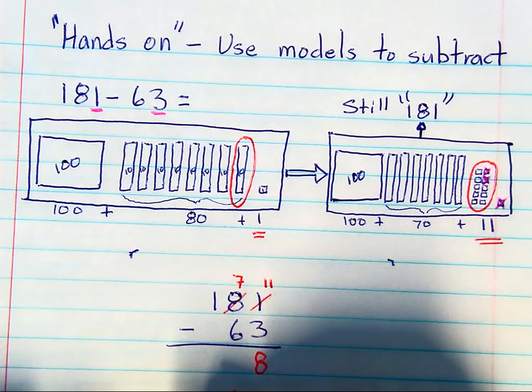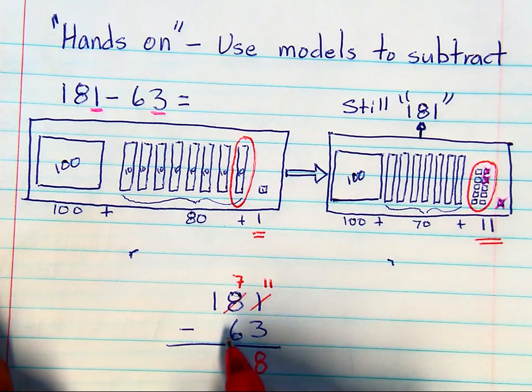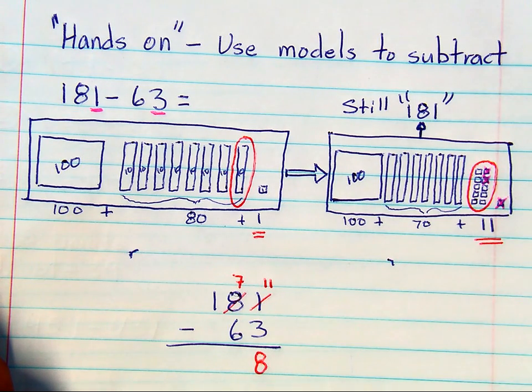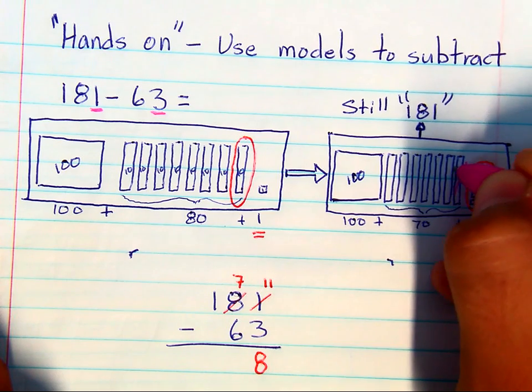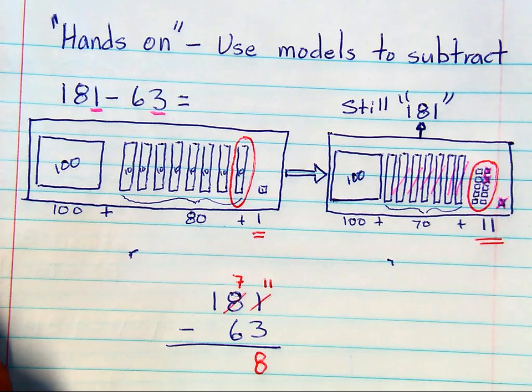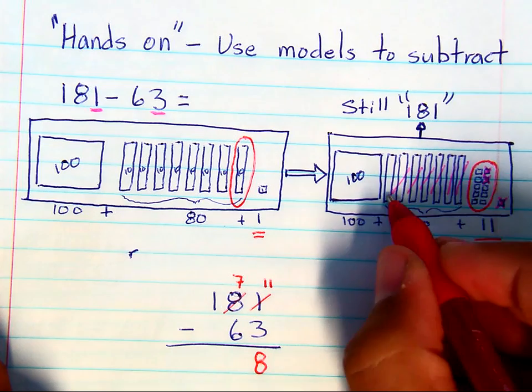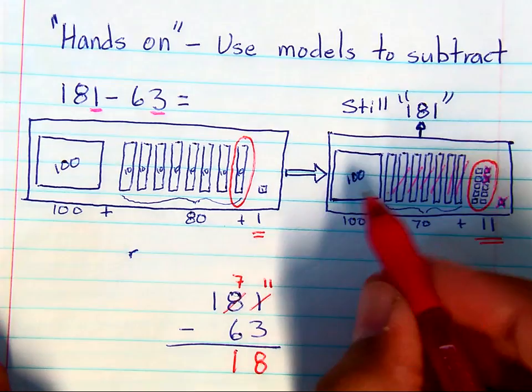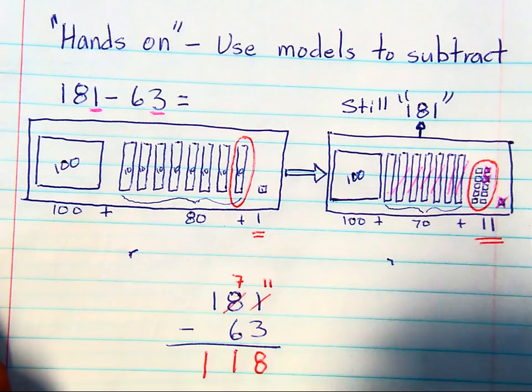And now 7 tens, taking away 6 of them, you take 1, 2, 3, 4, 5, 6 away, you are left with 1 ten. And of course that 100 is still there.